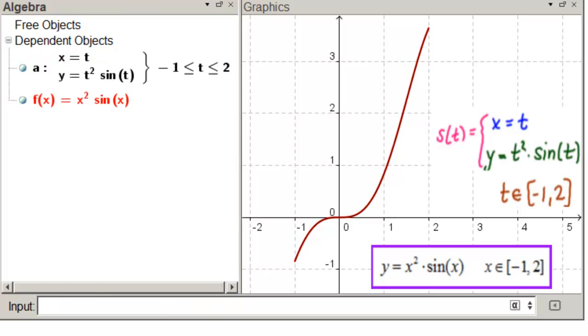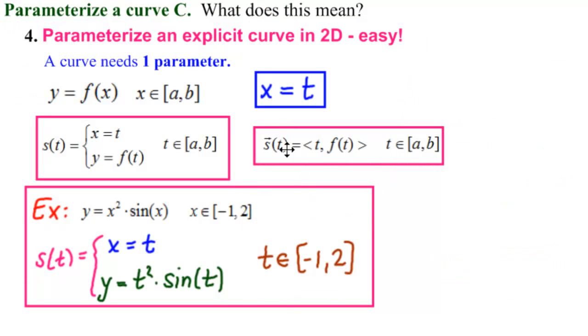And sure enough, it is. And notice this is in exactly the form that we wrote it in down here. So that's how to parametrize an explicit curve in 2D. You simply let X equal to T and substitute T into your Y and take the X interval as your T interval.